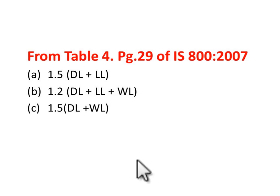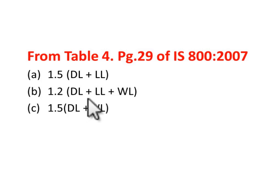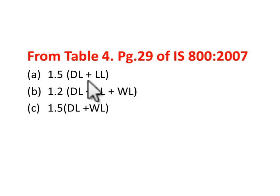From these values, load combinations are formed. The first combination is 1.5 × (DL + LL). The second is 1.2 × (DL + LL + WL). The third is 1.5 × (DL + WL). For each combination, the maximum positive and minimum negative member forces are found. Maximum positive values identify compression members; minimum negative values identify tension members. These are used to design each member of the roof truss.